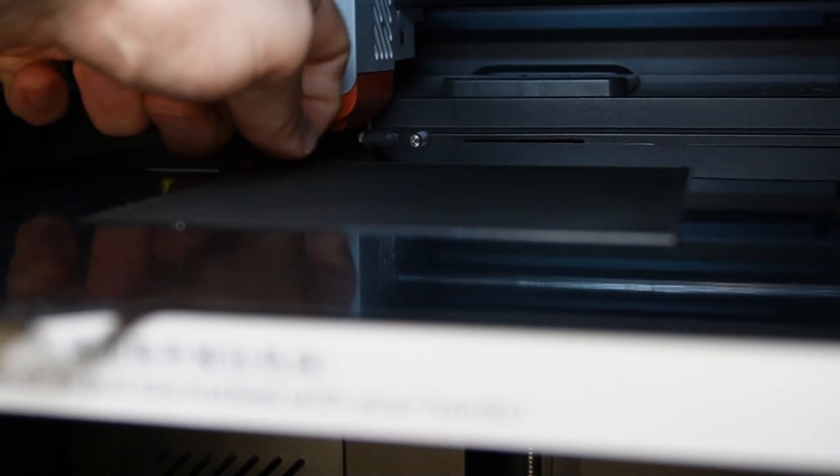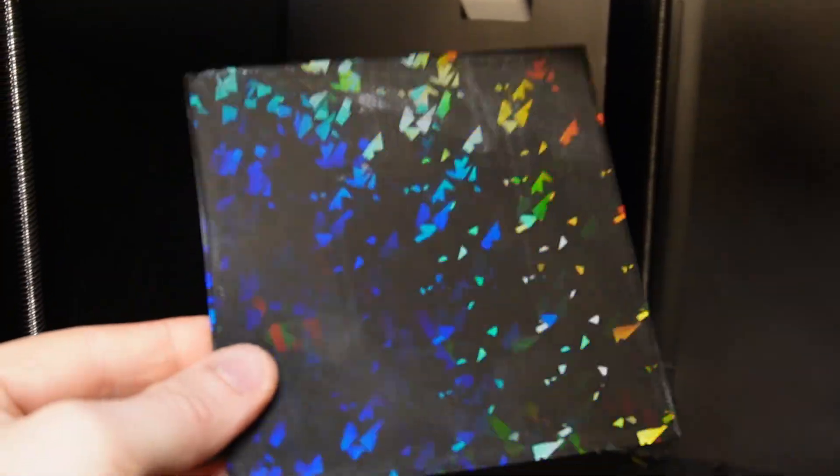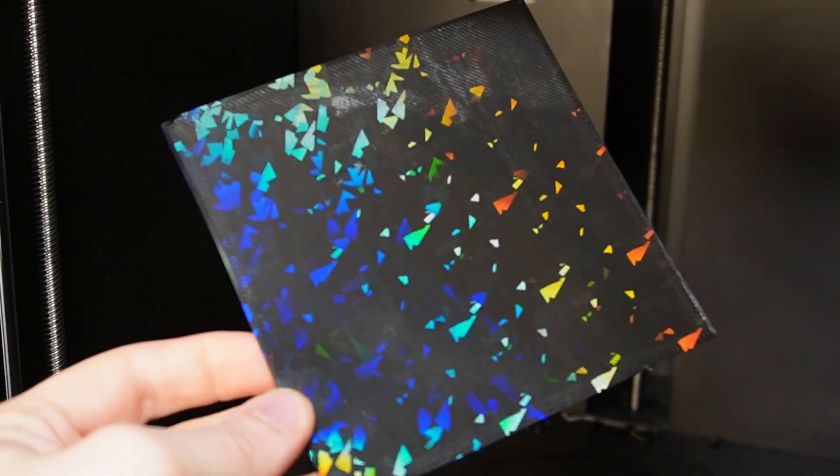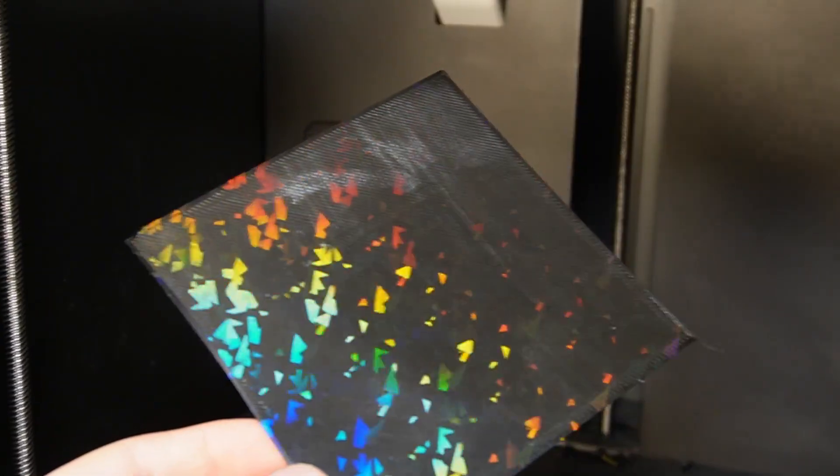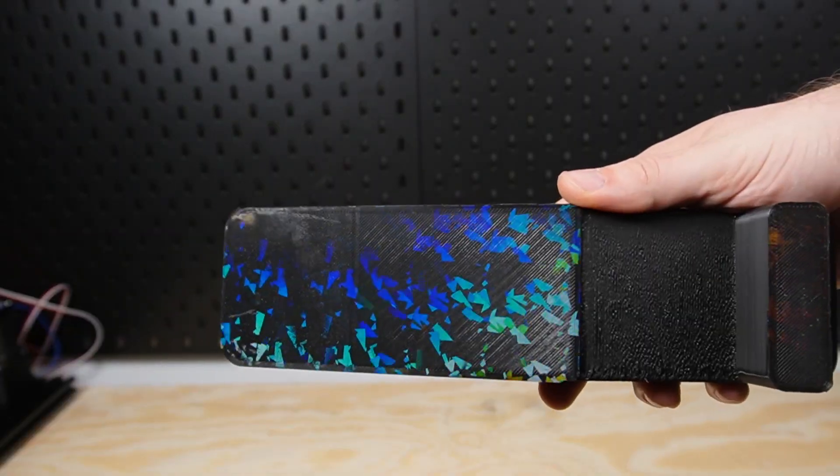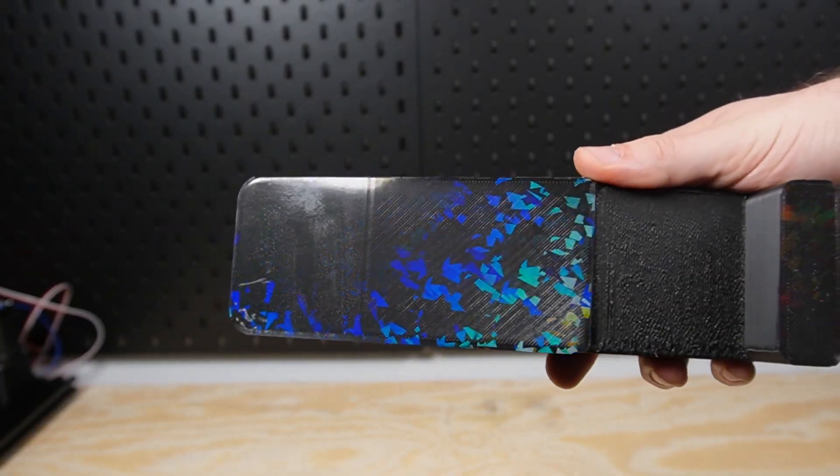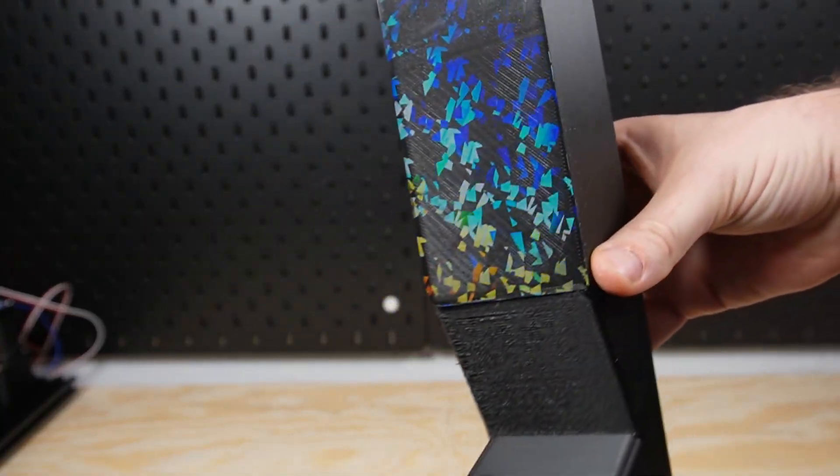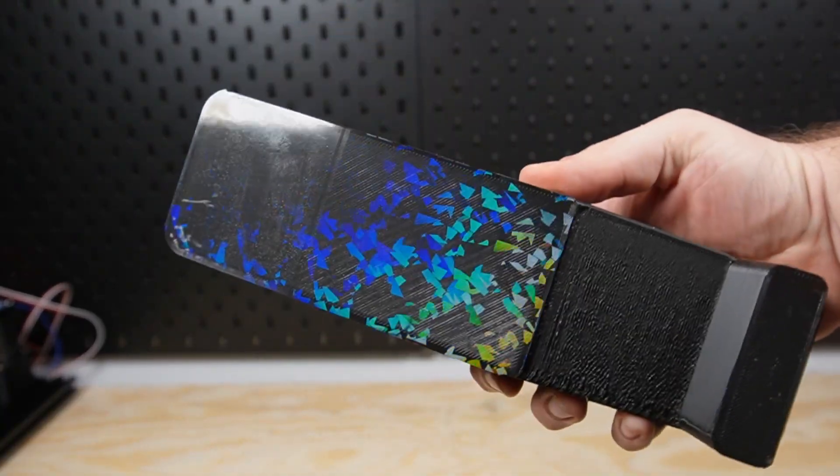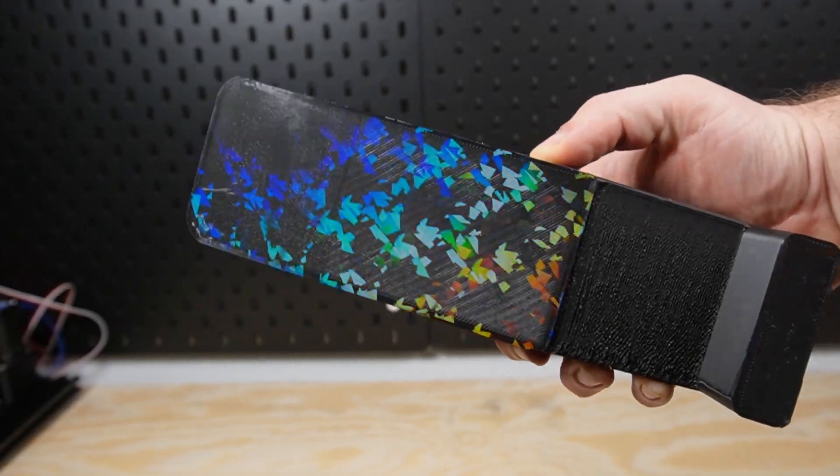As you print, the molten filament is pressed under pressure into the exact microstructure. It perfectly molds to these tiny ridges like an optical negative. As the material cools, it freezes these structures in place. When light hits the bottom of your print, it now hits a surface that bends and reflects the spectrum, changing with every viewing angle. The result? Your print seems to generate its own light. The holographic effect isn't in the filament's color, but in the shape of its surface.